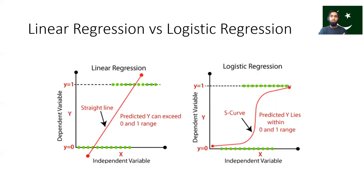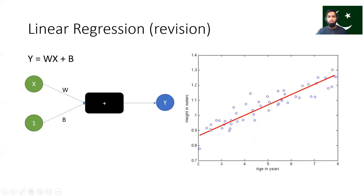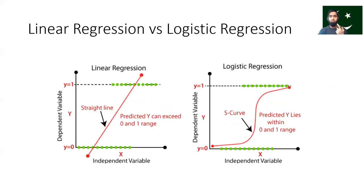What is the difference between linear regression and logistic regression? In linear regression we are predicting continuous values, such as someone's height being 1 meter, 1.1 meters, or 1.05 meters. But there are many problems where you need a yes or no answer — the output is 0 or 1. For example, does a patient have cancer or not? Is it a cat or not? Is it digit 6 or not? The answer is 0 or 1.